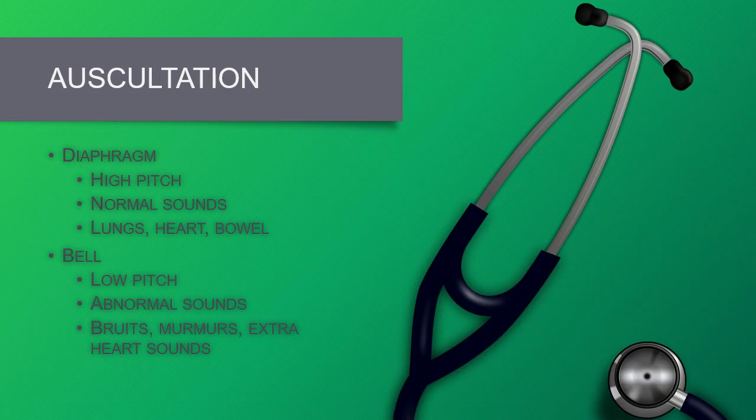Auscultation is the use of a stethoscope or other device like a Doppler to listen to sounds within the body. On your stethoscope, it has a diaphragm — the larger, flatter surface — and a bell, which is the hollow or smaller surface. The diaphragm is used to listen to high-pitched sounds, which are most of our normal sounds: your lung sounds, your heart sounds, and your bowel sounds. The bell is used to pick up lower-pitched sounds, and most of those are your abnormal sounds — such as bruits in your neck or over blood vessels in your abdomen or femoral area, and murmurs or extra heart sounds.